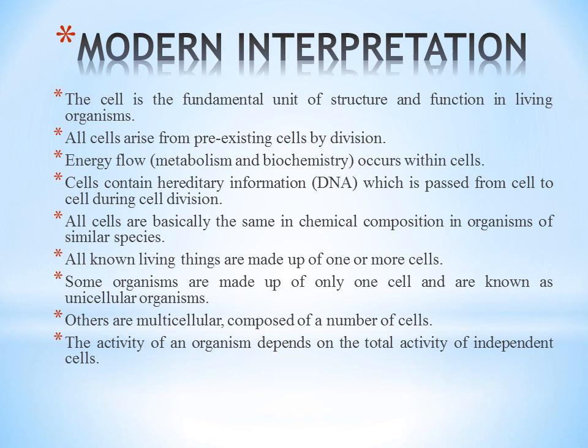The modern interpretation states that the cell is the fundamental unit of structure and function in living organisms, and that cells arise from pre-existing cells by cell division. Energy flow occurs within the cell. Cells contain hereditary information known as DNA, which is passed from one generation to the next through cell division. All cells have basically the same chemical composition. Organisms made up of only one cell are unicellular, while those composed of many cells are multicellular. The activity of an organism depends on the total activity of its independent cells.